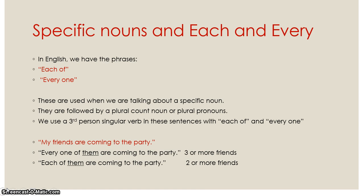In English, we have the phrases 'each of' and 'every one of.' These are used when we are talking about a specific noun, followed by a plural count noun or plural pronouns, with a third person singular verb. For example, if I say 'my friends are coming to the party,' another way is 'every one of them is coming to the party' — three or more friends. And 'each of them is coming to the party' would be two or more friends.